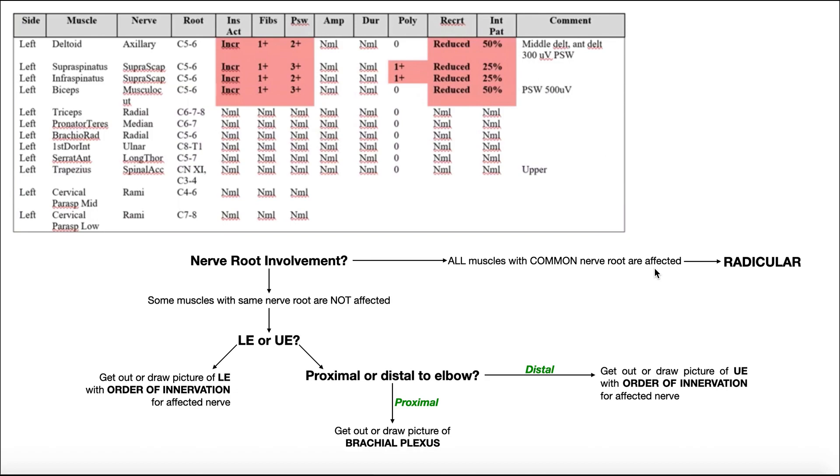So let's take C5 nerve root for example. The axillary nerve, deltoid, this has C5 and C6. It's adversely affected. The supraspinatus, innervated by the suprascapular nerve, also has C5, adversely affected. We don't care how they're adversely affected for this, but you can see that the first four muscles here are all adversely affected, and they all have C5 contributions.